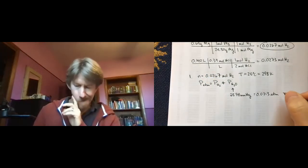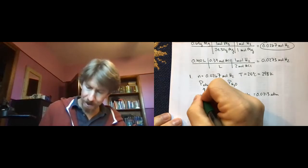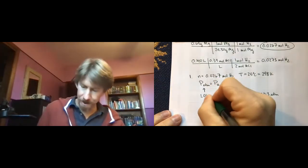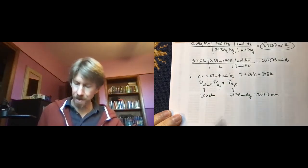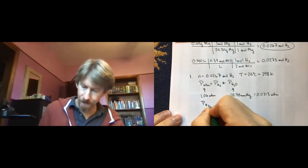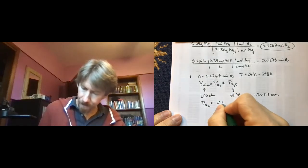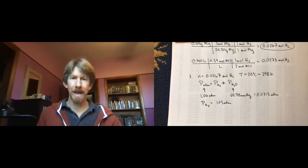All right. So we know our partial pressure or total pressure, which is 1.06 atmospheres. And we can subtract off and solve for our partial pressure of hydrogen and get 1.03 atmospheres.